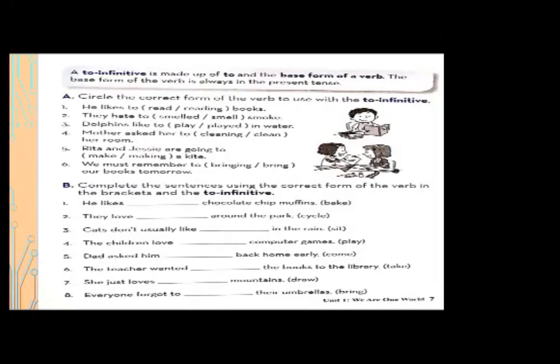Now Activity B: complete the sentence using the correct form of the verb in the brackets with the to-infinitive. Number one: he likes — blank — chocolate chip muffins; the verb is 'bake,' so write 'to bake.' He likes to bake chocolate chip muffins. Write 't' in a small letter.